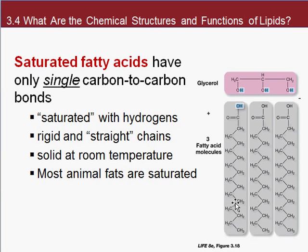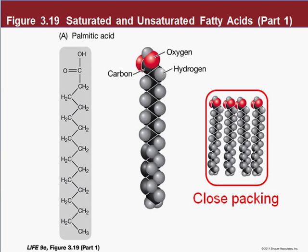Saturated fatty acids are fairly straight and solid at room temperature. They are also mostly animal fats. For example, bacon: the fat on bacon is solid. When you heat it up, it melts, but when the pan returns to room temperature, the bacon fat solidifies again. These saturated fatty acids are completely filled with hydrogen and solid because they can pack closely together.